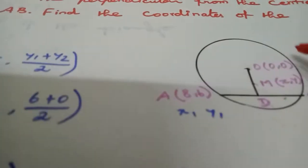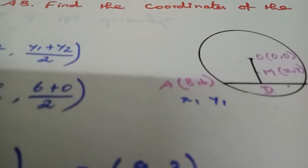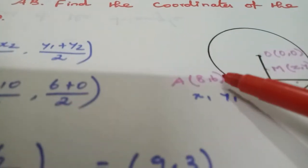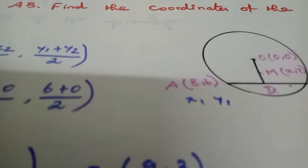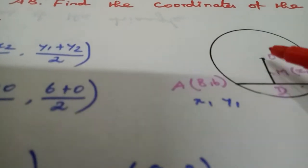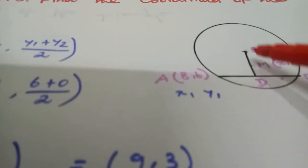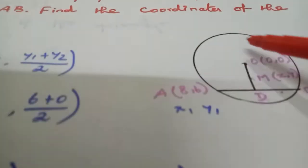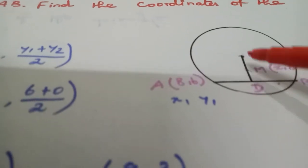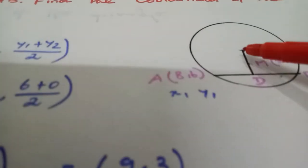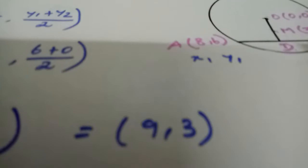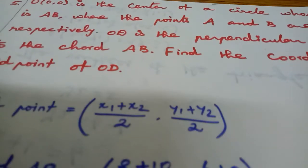So now you have one chord AB. Point A is at (8,6) and point B is at (10,0). OD is the perpendicular from the center of the circle to the chord. Find the coordinate of the midpoint of OD.